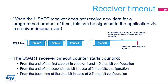The USART supports a receiver timeout feature. When the USART doesn't receive new data for a programmed amount of time, a receiver timeout event is signalled and an interrupt is generated if enabled. The USART receiver timeout counter starts counting from the end of the first stop bit in case of 1 and 1.5 stop bit configuration; from the end of the second stop bit in case of 2 stop bits configuration; or from the beginning of the stop bit in case of half stop bit configuration.